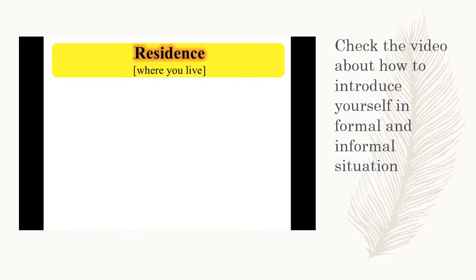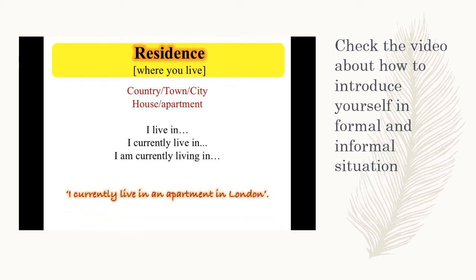Residence. So residence includes where you live. You can describe the country, town or city that you live in or the house or apartment. I live in, I currently live in, I am currently living in. So examples of this include I currently live in an apartment in London.